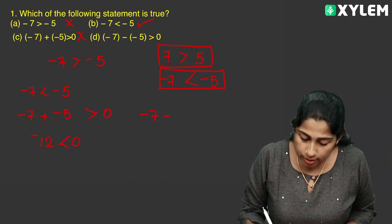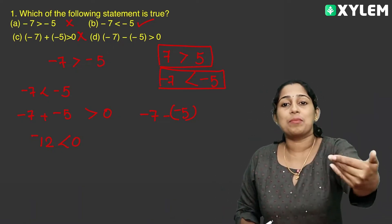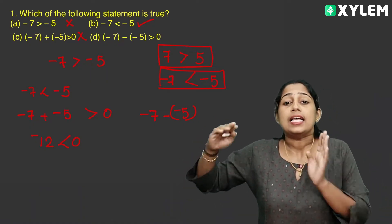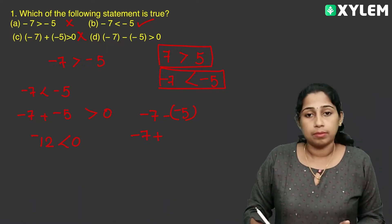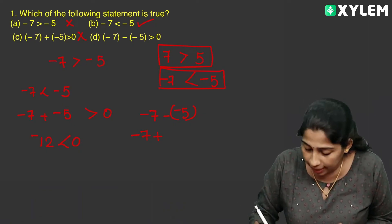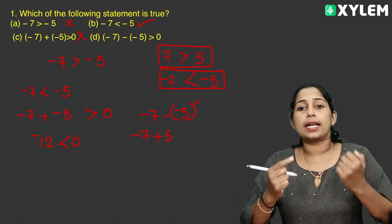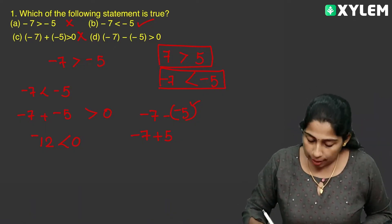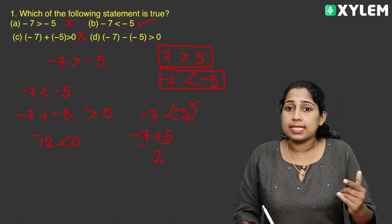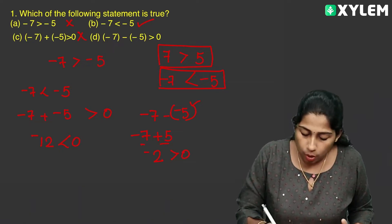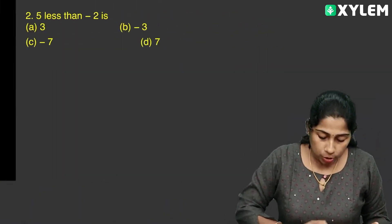Now the statement: minus 7 minus of minus 5. In subtraction, we add the additive inverse of the second number. The additive inverse of minus 5 is plus 5. So minus 7 plus plus 5 — different signs, so we subtract: 7 minus 5 is 2, and the bigger number 7 has the minus sign, so the answer is minus 2. Minus 2 is not greater than 0. So the answer is: minus 7 is less than minus 5.